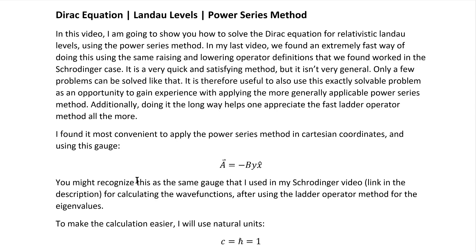Let's do this. In this video, we're going to solve the Dirac equation for relativistic Landau levels, again, but in a different way. In my previous video, we solved this problem extremely quickly and elegantly, with the same raising and lowering operator definitions as you can use to solve the Schrodinger version of this problem. But that method isn't very general. While it is really cool and wonderful to use when you can, it's not like you can usually solve the Dirac equation for most systems as elegantly with a method that looks anything like that.